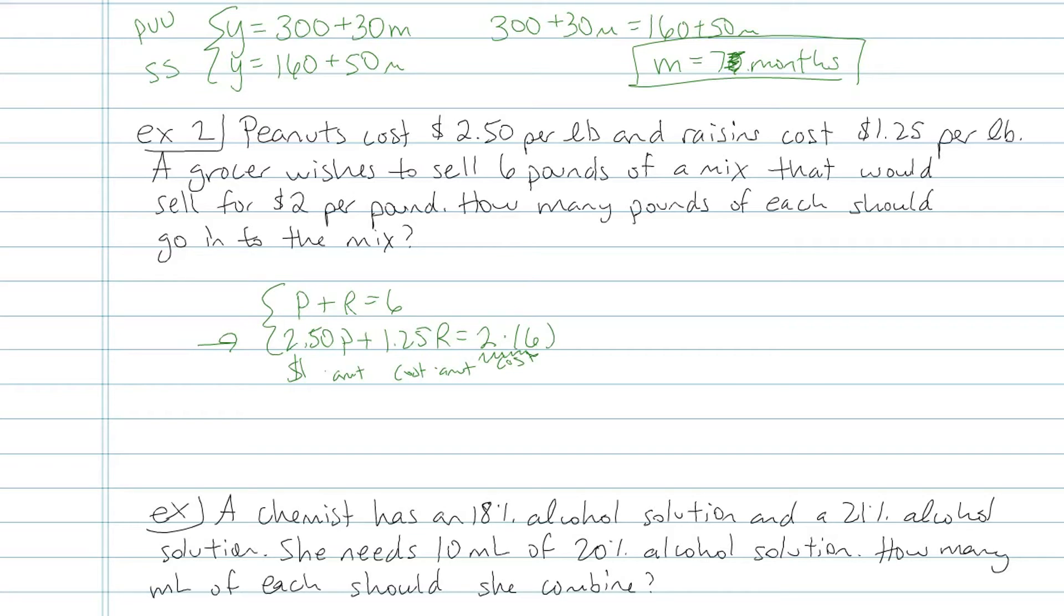Now, I personally would solve this equation using substitution. You don't have to. You surely could use elimination. I'm going to let you guys try that on your own. You end up getting that peanuts should be 3.6 pounds, and raisins should be 2.4 pounds. I'll let you guys solve that one on your own.